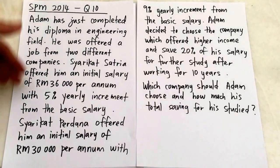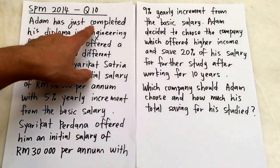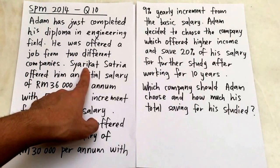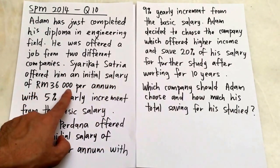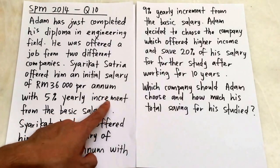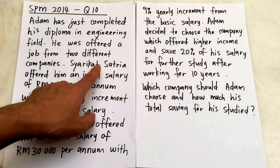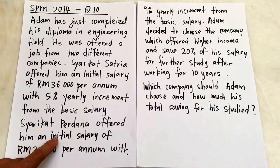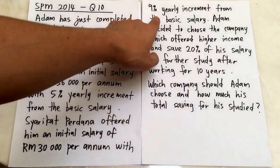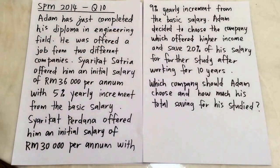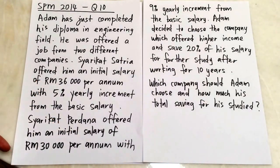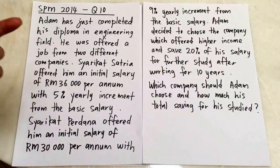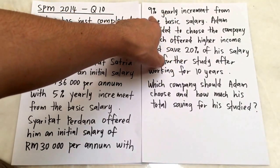Let's look at the question. Adam has just completed his diploma in engineering field. He was offered a job from two different companies. Syarikat Satria offered him an initial salary of RM36,000 per annum with 5% yearly increment from the basic salary. Syarikat Berdana offered him an initial salary of RM30,000 per annum with 9% yearly increment from basic salary. So Berdana actually offers lower for the initial salary because it's just 30,000 compared to 36,000, but the increment percentage is higher—this one is 9%, this one is just 5%.